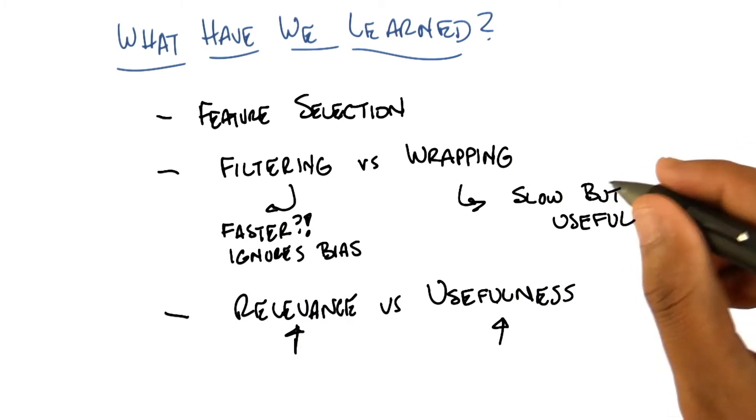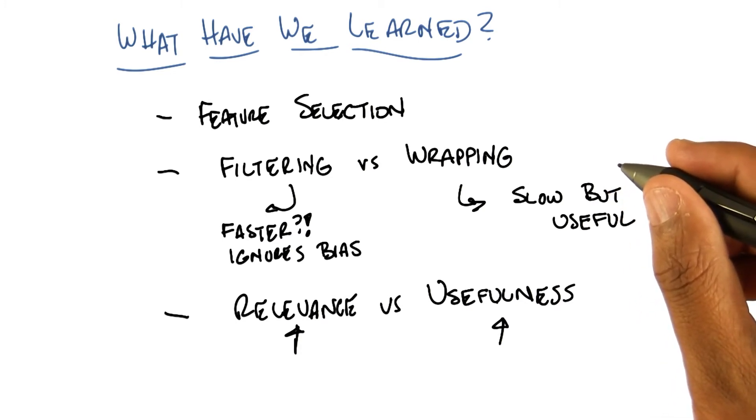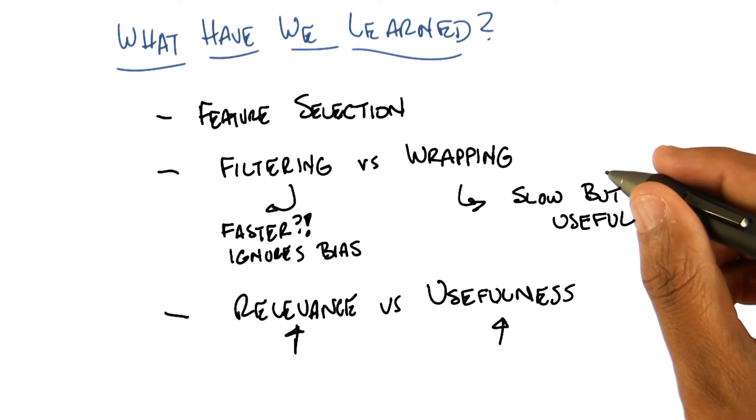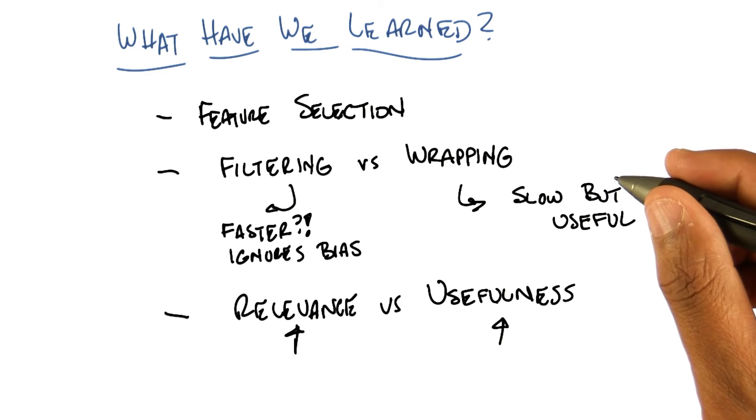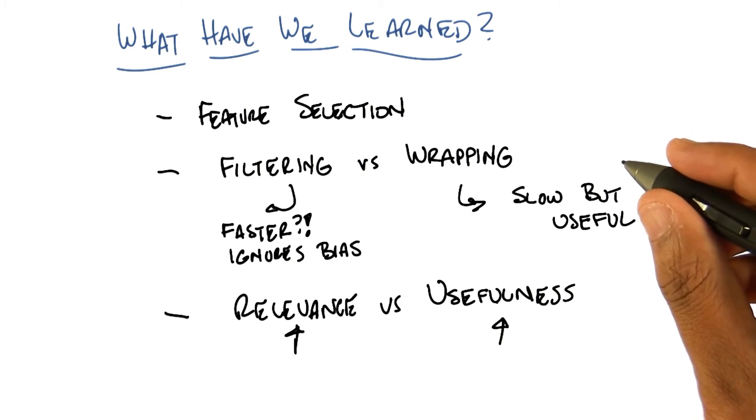Yeah. Well, the main power of Bayes optimal classifiers is that it's sort of the gold standard. It's the ultimate that you could do if you had everything and all the time in the world. Could I say that relevance is usefulness with regard to the Bayes optimal classifier? Yes, actually you could. I like that. It's a special case of usefulness. Oh, wait.